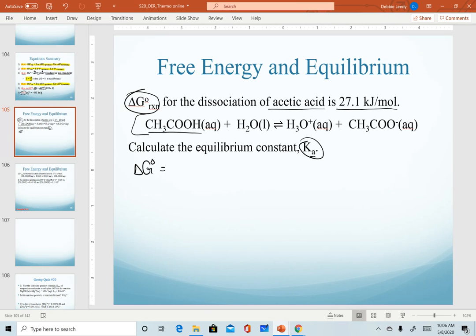Since we are given delta G naught and asked to find our equilibrium constant, we're going to use this equation. Remember that any subscript for K works in this equation. I like to predict my value of K before I start calculating based on the value of delta G naught. Recognize a positive delta G naught tells us that this is a reactant favored system.